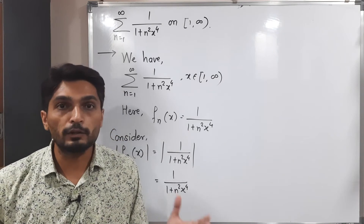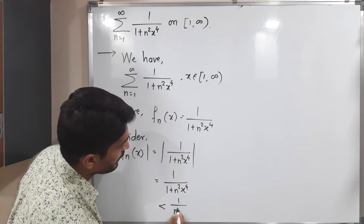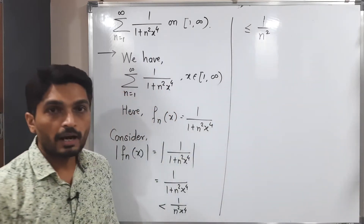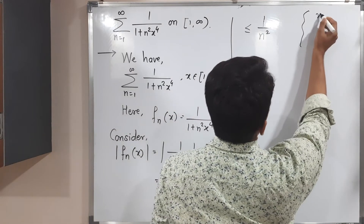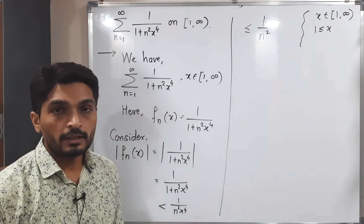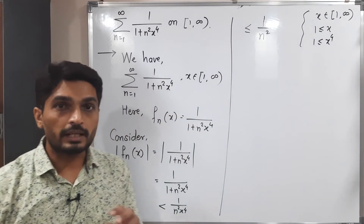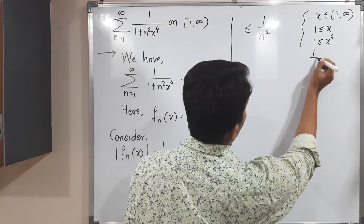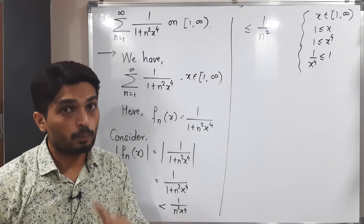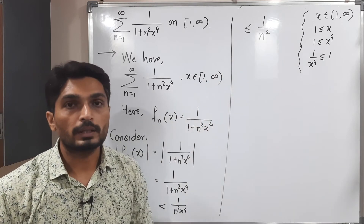If we reduce the denominator, the value increases. Removing the 1 from the denominator gives 1 upon (n² x⁴), which is an upper bound. Now since x ∈ [1, ∞), we have x ≥ 1, and raising both sides to the power 4 gives x⁴ ≥ 1. Taking reciprocals reverses the inequality, so 1/x⁴ ≤ 1. Therefore 1 upon (n² x⁴) ≤ 1 upon n².